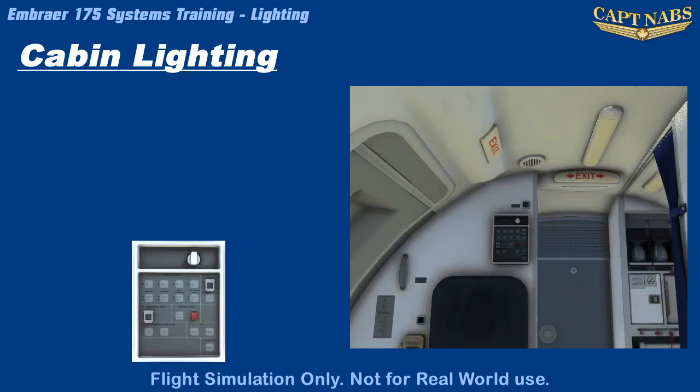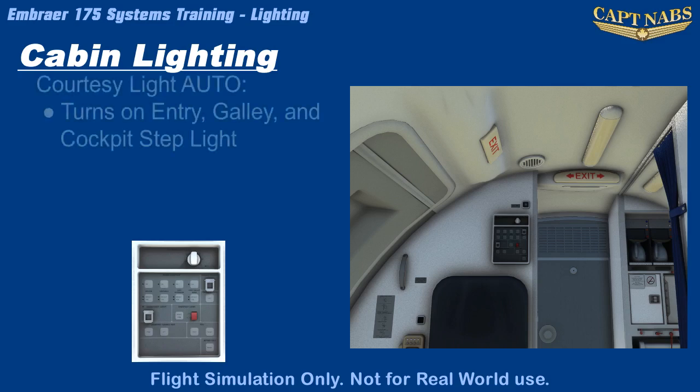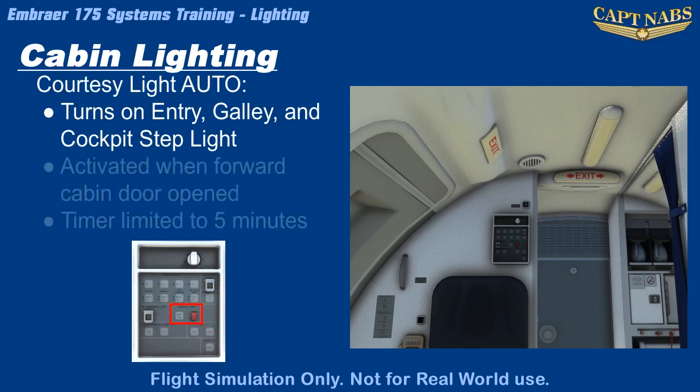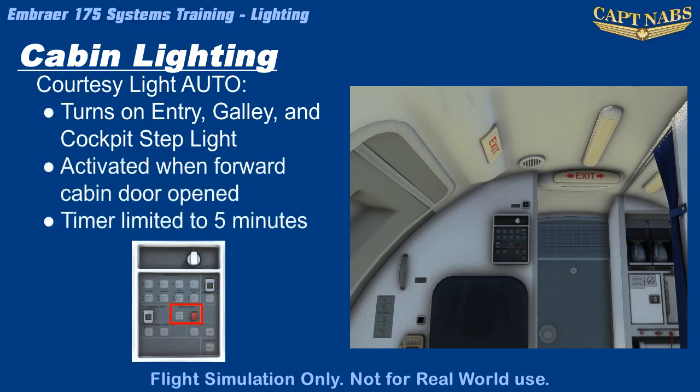A courtesy light switch is also located on each flight attendant panel. In the auto position, the courtesy light switch will activate the cabin lights in the forward entry area, the forward galley, and the cockpit step light for 5 minutes after the forward passenger door is opened. This allows the crew, especially the pilots, time to enter a dark flight deck and energize the aircraft electrical system. In the off position, this circuit is disabled. A reset button on the same panel will reset the 5-minute timer without closing and opening the door again.